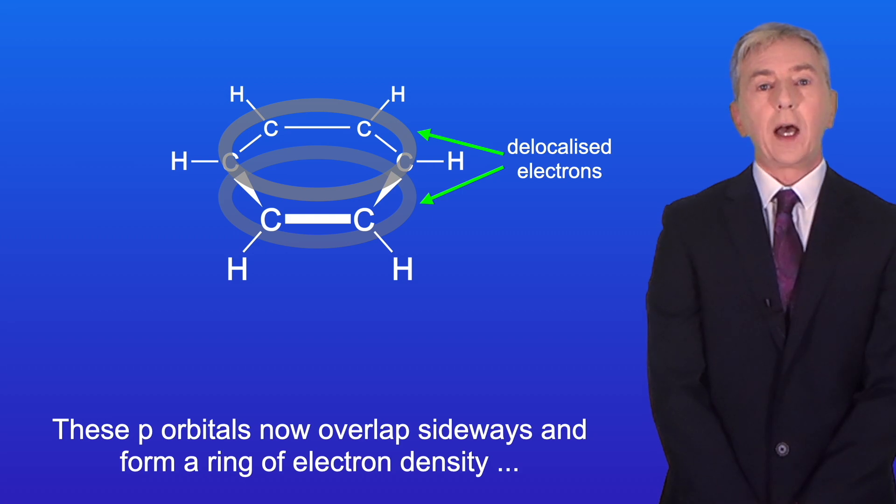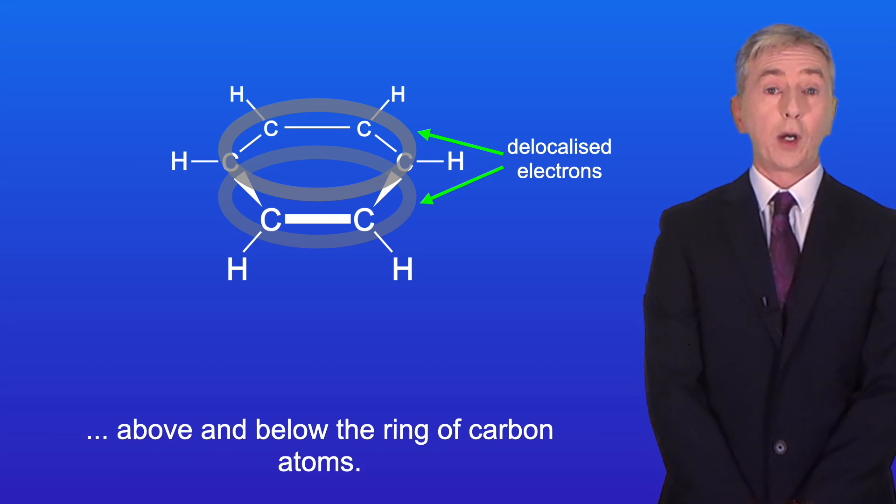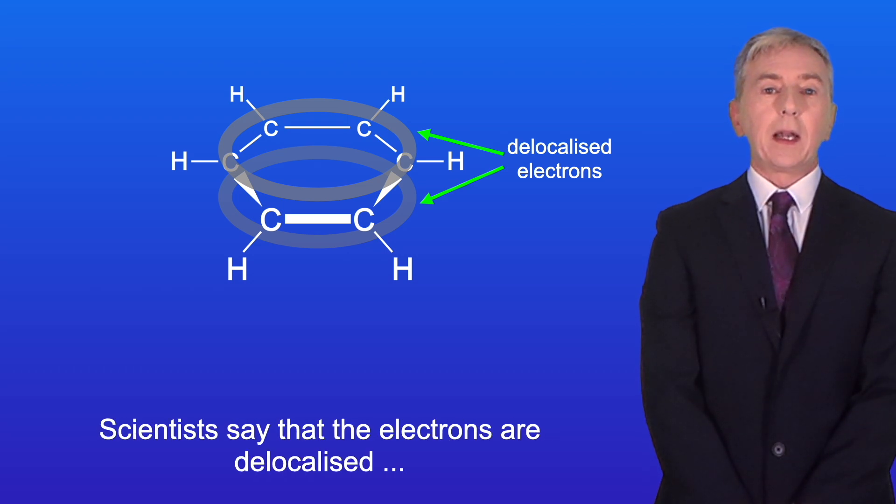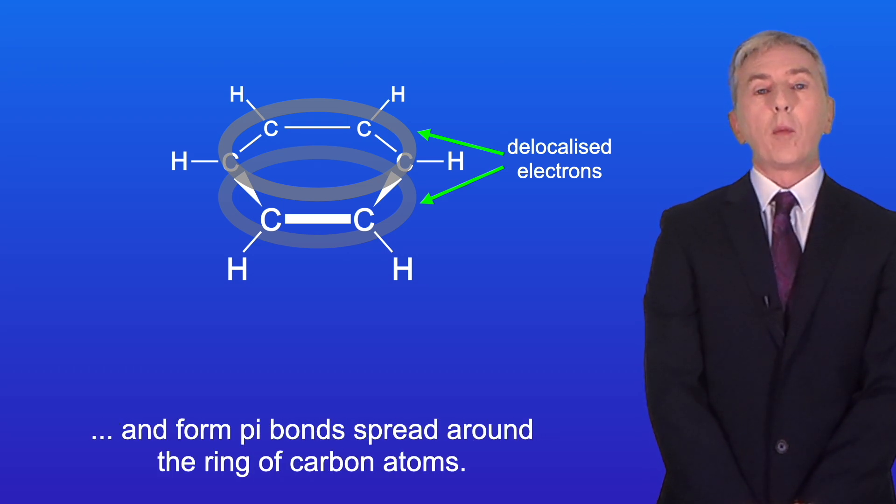These p orbitals now overlap sideways and form a ring of electron density above and below the ring of carbon atoms. Scientists say that the electrons are delocalized and form pi bonds spread around the ring of carbon atoms.